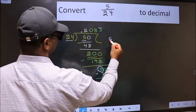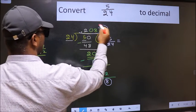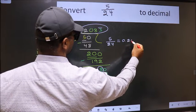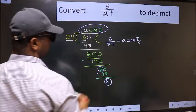Therefore, decimal of 5 by 24 is this one. 0.2083. Bar on this number. This is our answer.